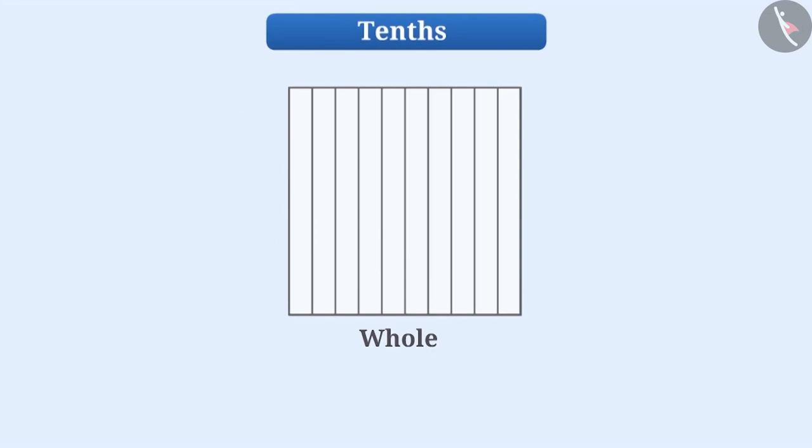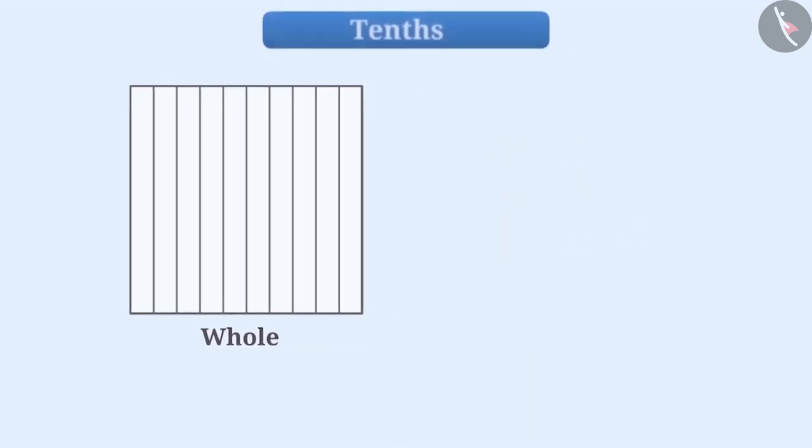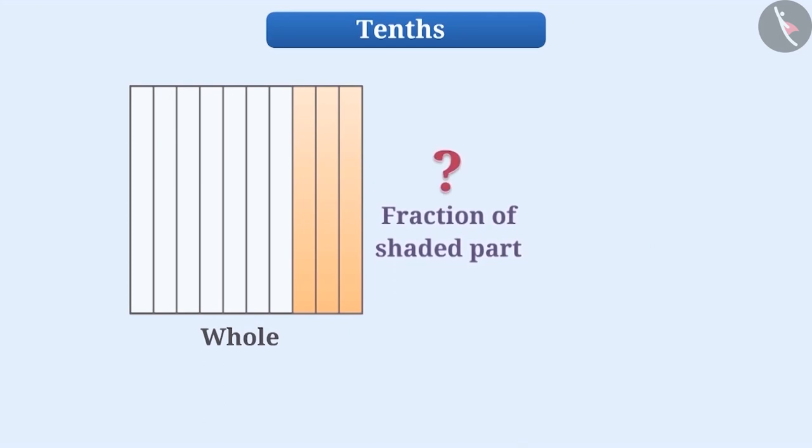Let's assume we call a big square as a whole. If we divide it into ten strips of equal size, then each strip will represent one tenth part of the whole. If we shade three parts out of these, then what will be the fraction of the shaded part of this whole square? Think a little.